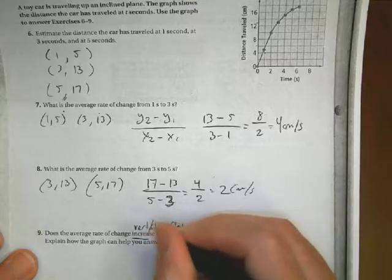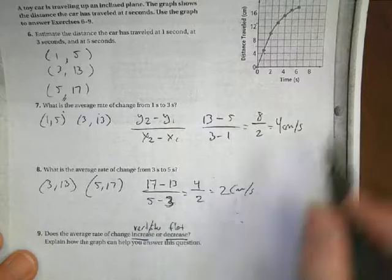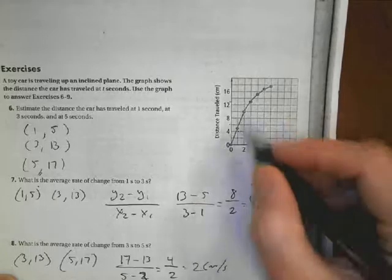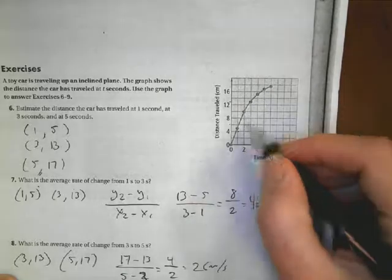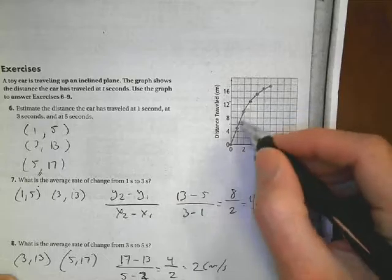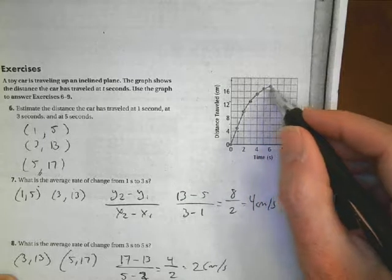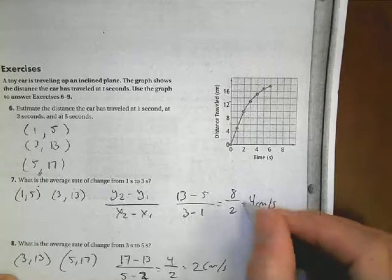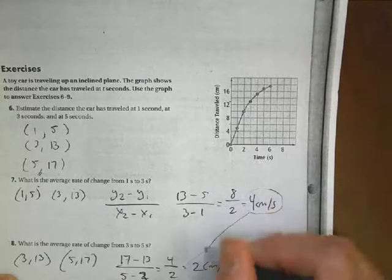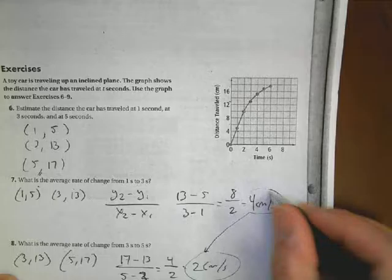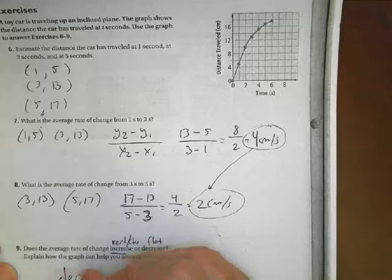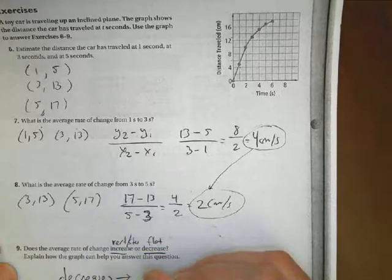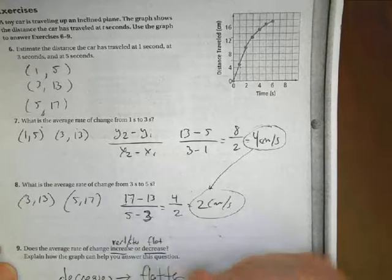So the rate of change from 1 to 3 is here. So here's my 1 value. 1 is at (1,5). 3 is at (3,13). So I'm going to do y2 - y1 over x2 - x1. And so when I plug my terms in, I have 13 - 5 over 3 - 1. 13 - 5 is 8. 3 - 1 is 2. And that reduces down to 4 meters per second. And that's the idea there. So again, just looking at the terms, the points. It's a simple y2 - y1.